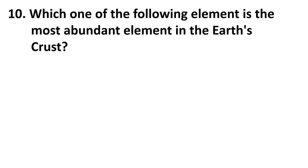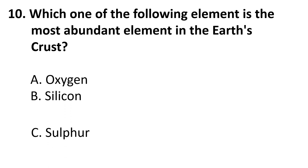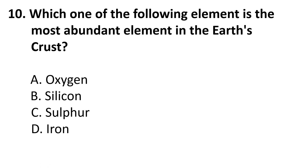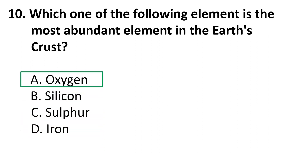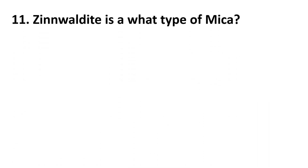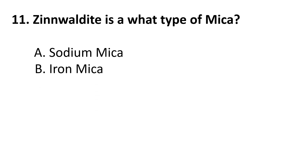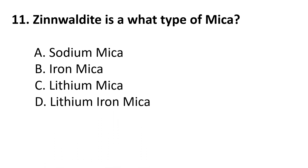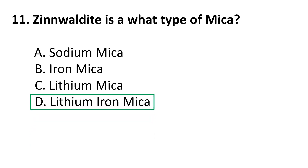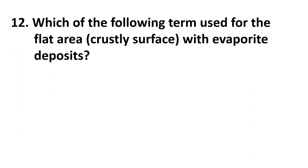Tenth question: Which one of the following elements is the most abundant element in the Earth's crust? Choices: A) Oxygen, B) Silicon, C) Sulfur, D) Iron. The correct answer is A, Oxygen — that's why the Earth's crust is also known as the oxysphere. Eleventh question: Zinnwaldite is what type of mica? Choices: A) Sodium mica, B) Iron mica, C) Lithium mica, D) Lithium-iron mica. The correct answer is D, Lithium-iron mica.